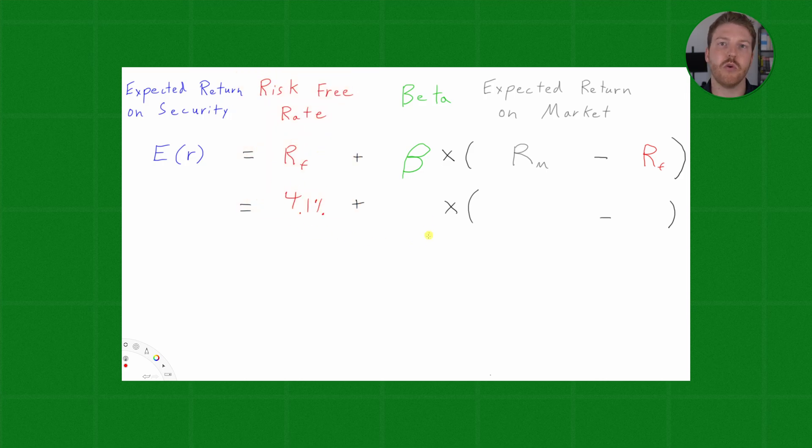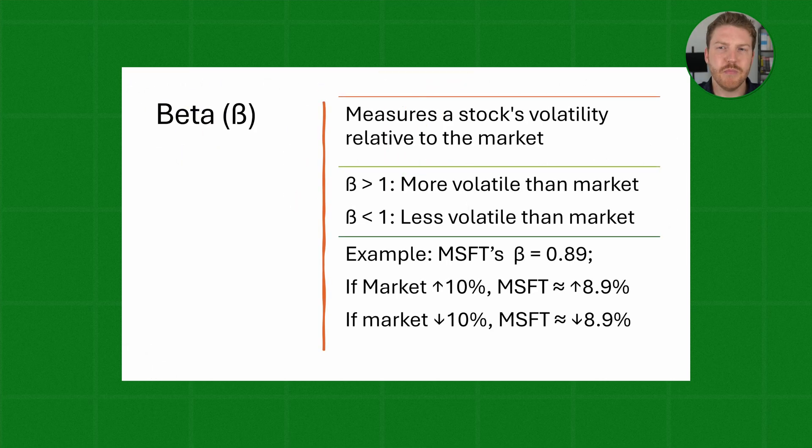Now, the next variable that we're going to have to consider is the beta of the security in question. Beta measures a stock's volatility relative to the market. In this example, we'll use the S&P 500 as an example of the market. Now, a beta greater than 1 would be more volatile than the market, whereas a beta of less than 1 would be less volatile than the market.